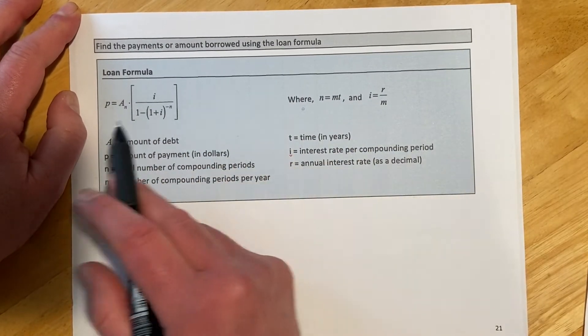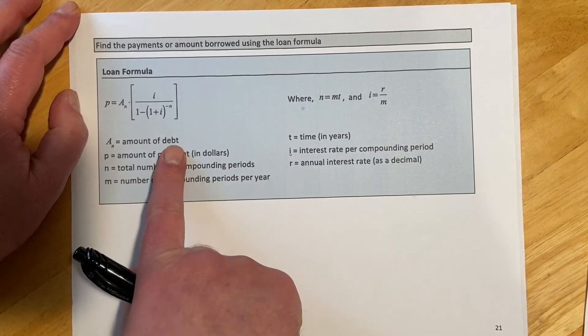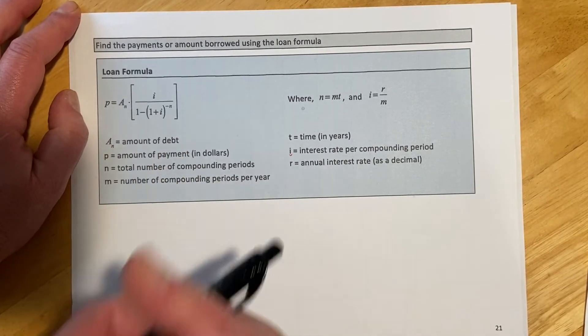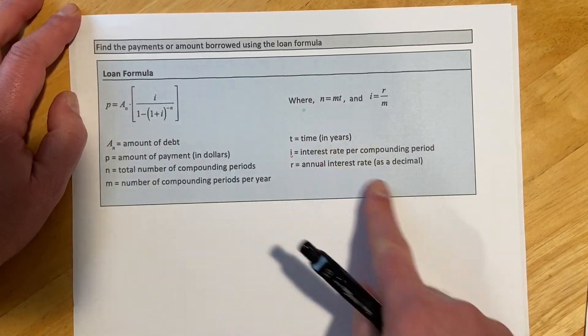Okay, for a loan formula, I think we just have one new quantity, and that's that A sub N, and this is going to be the amount of the debt. So it's how much money you're financing. Other than that, I think it's all stuff we've used before.